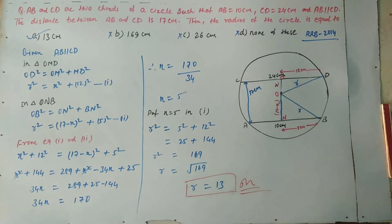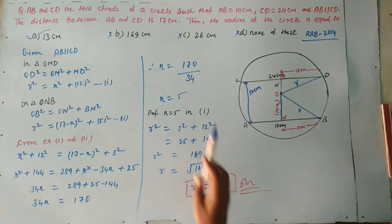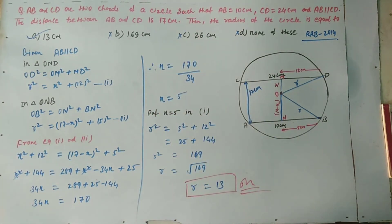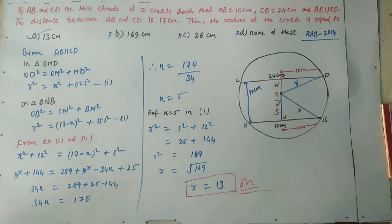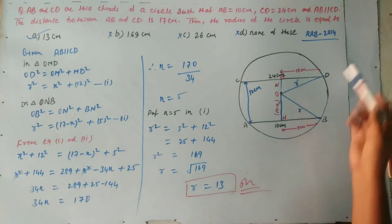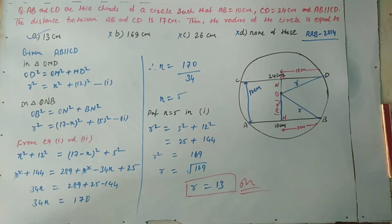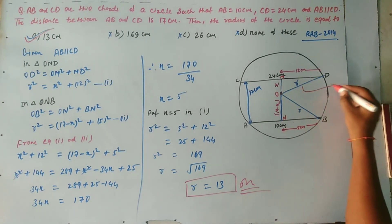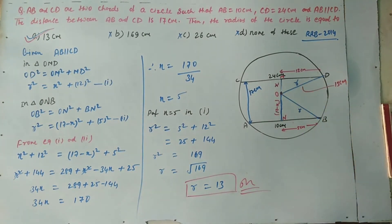तो option A देखिए — 13 cm। Answer है option A: 13 cm। AB and CD are two chords of a circle such that AB = 10 cm, CD = 24 cm, AB parallel to CD, distance between AB and CD is 17 cm — then radius of the circle equals 13 cm, option A. For more updates, please subscribe. Thank you for watching.